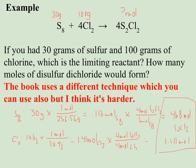So now I've got my comparison. I can make 0.468 moles from the sulfur, but I could make 1.41 moles from the chlorine. So this is the smaller or the limiting amount and S8 is my limiting reactant. So how many moles of disulfur dichloride would form? Only the 0.468, because then I'm out of sulfur.